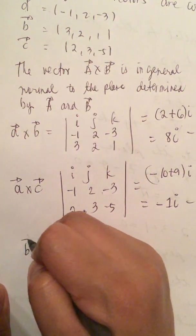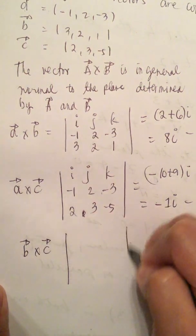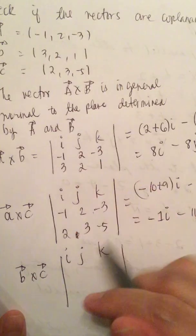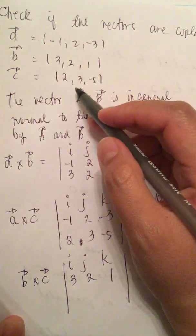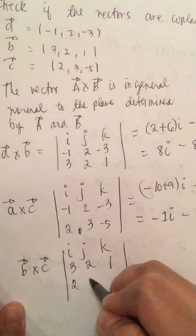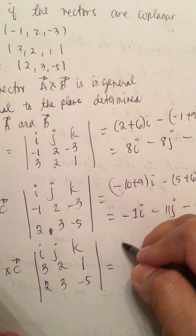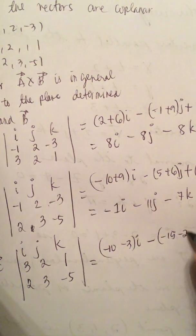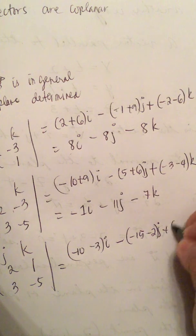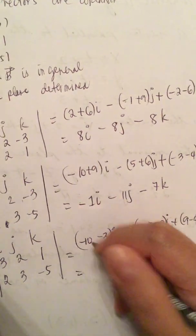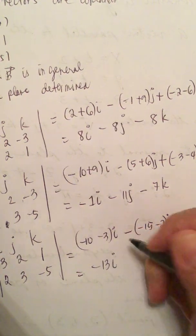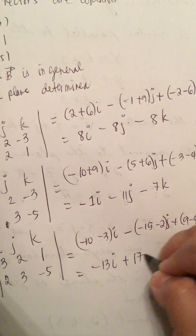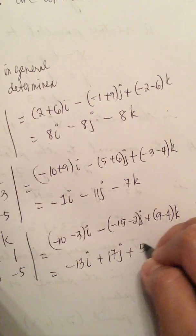Vector B cross C: setting up I, J, K with B as 3, 2, 1 and C as 2, 3, negative 5. This equals negative 10 minus 3 times I, minus negative 15 minus 2 times J, plus 9 minus 4 times K. This equals negative 13I plus 17J plus 5K.